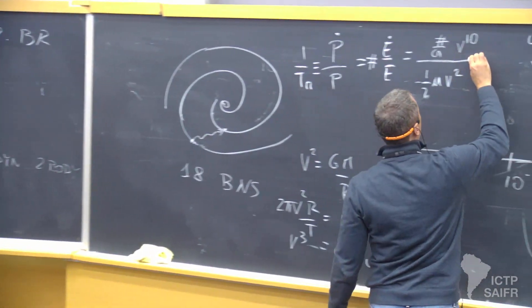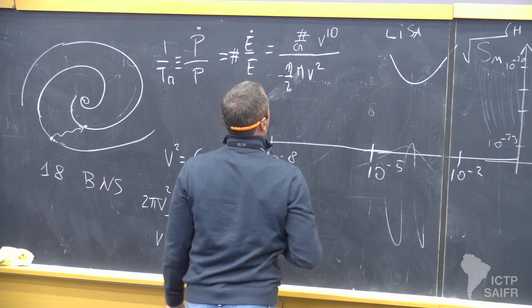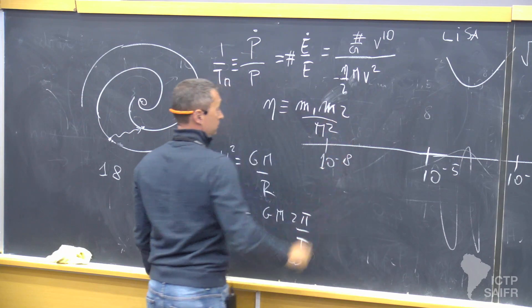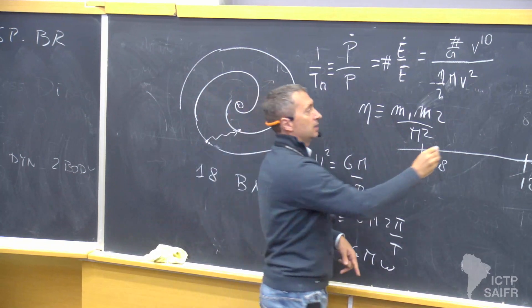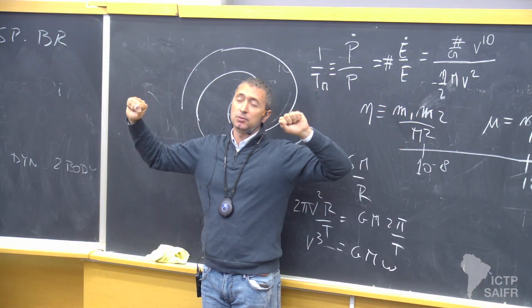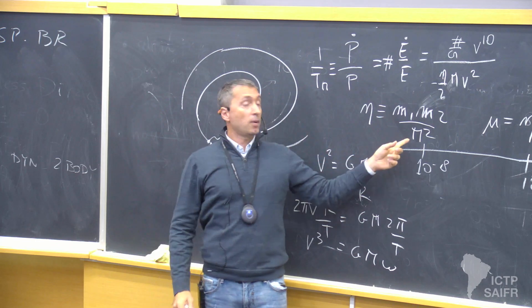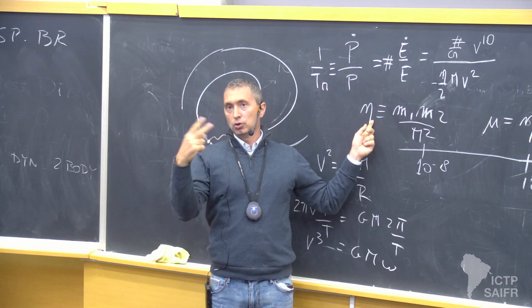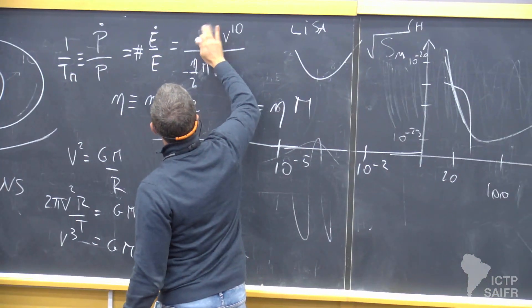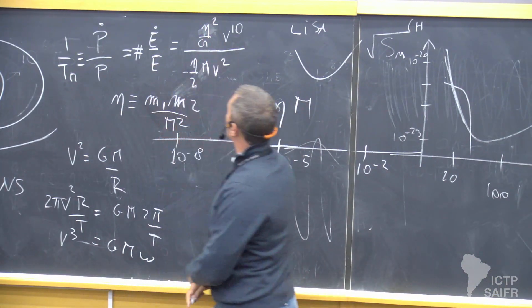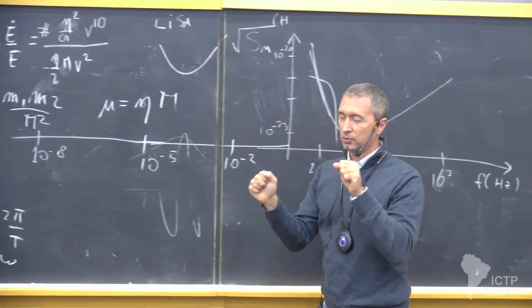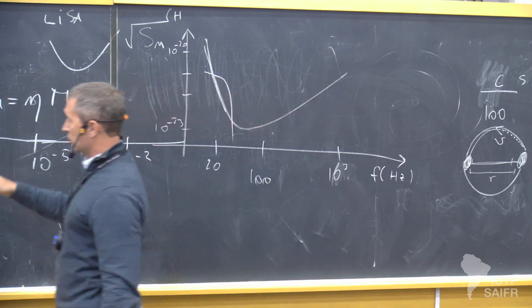If you want to be more careful about mass scaling: the reduced mass is the symmetric mass ratio η = m₁m₂/M² times the total mass M. The symmetric mass ratio η goes from 0 to 1/4 and for a double neutron star system is close to 1/4 — so it's not a big factor. The energy loss goes as η² times the v^10 term. It's a nice parameterization because instead of two mass scales m₁ and m₂, you have one dimensionful total mass M and one dimensionless number η.